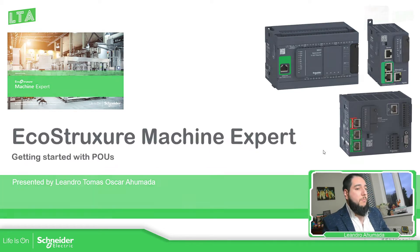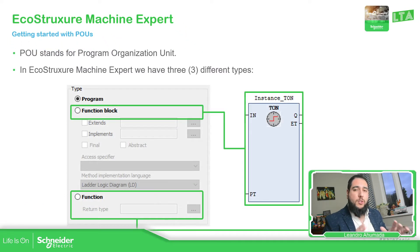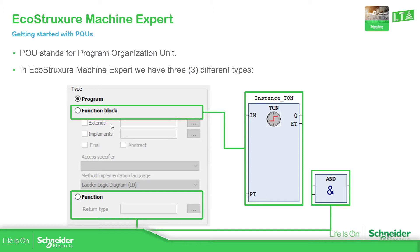In the software, we have three different types of POUs: Program, FunctionBlock, and Function. The idea of using the Function is because you only return one type of variable. For example, the AND function has two inputs and one output, and the output will be a boolean variable. But we can configure the type of the variable that we want for the function. We can use the system functions or create our own function.